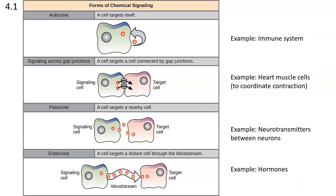Paracrine signaling is a cell targeting a nearby cell — the message moves a short distance outside the cells but doesn't travel far. Endocrine signaling involves a really long distance, where the cell targets a distant cell through the bloodstream. Examples: autocrine is heavily used in the immune system; gap junctions are used by heart muscle cells to coordinate contraction; paracrine includes neurotransmitters signaling between neurons; and endocrine is associated with hormones traveling in the bloodstream.